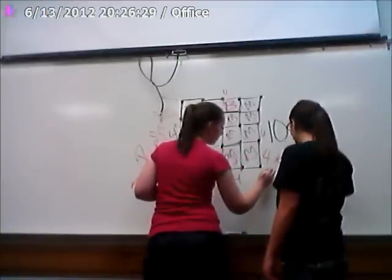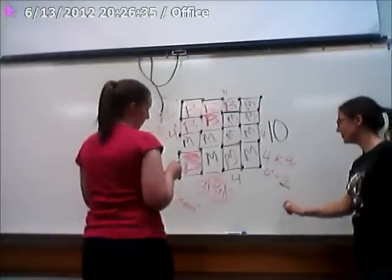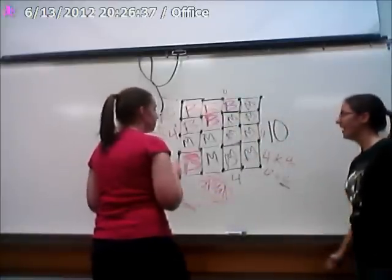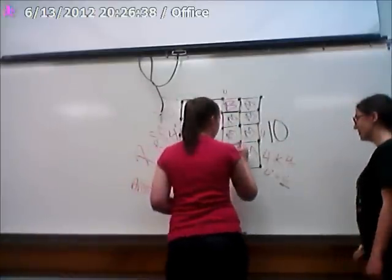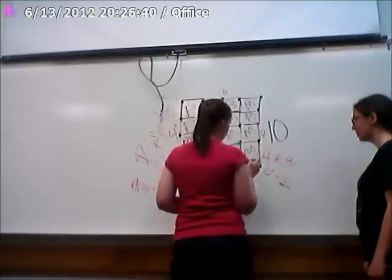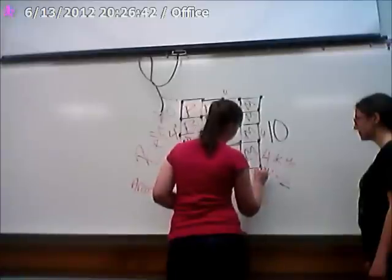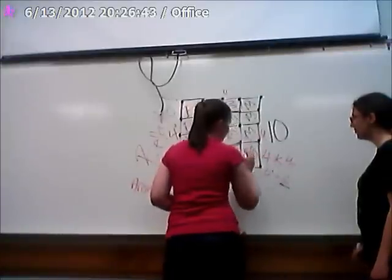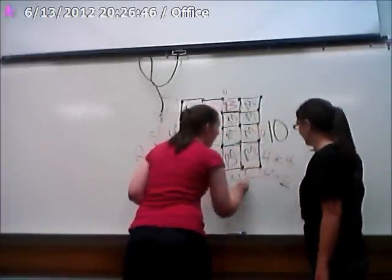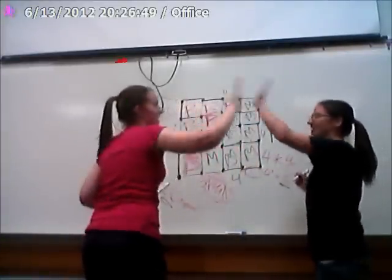Oh, that's the same. The area and the perimeter are the same. But this one is one, one, one, one. So it has a perimeter of four. But an area of only one. Yeah.